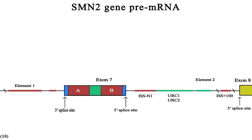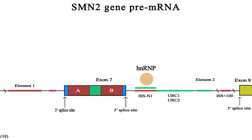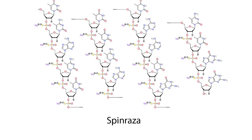So if we can somehow change the regulatory elements' behavior around exon 7, we can correct the splicing of the SMN2 gene. For example, if we make a single-strand sequence of nucleotides complementary to a silencer element on the SMN2 gene — like ISS-N1 — it can prevent the interaction between the HNRNP protein and ISS-N1. So it can no longer silence the spliceosome, and exon 7 can remain in the final mRNA. This approach is called an antisense oligonucleotide, and the drug Spinraza is based on that — it is designed to mask ISS-N1 to increase SMN protein production from the SMN2 gene.